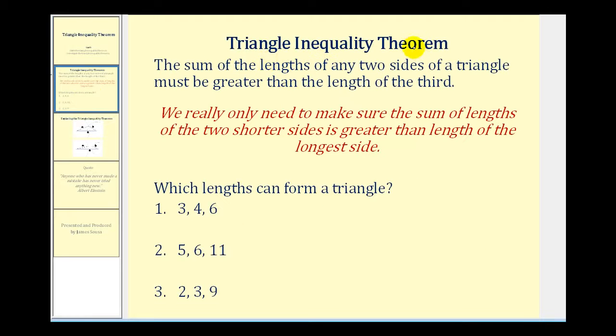The Triangle Inequality Theorem tells us that the sum of the lengths of any two sides of a triangle must be greater than the length of the third. If this is not the case, we actually can't form a triangle.